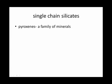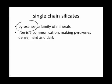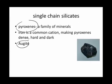One example of a single chain silicate is the family of minerals called the pyroxenes. Pyroxenes tend to contain iron as a cation, making pyroxenes very dense, hard and dark. A very common pyroxene that we'll be seeing a lot of is augite.